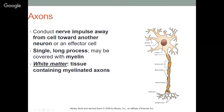Axons may be covered with myelin — a protective coating made by Schwann cells that creates the myelin sheath. White matter is tissue that contains myelinated axons. That's the definition of white matter: any tissue containing myelinated axons.